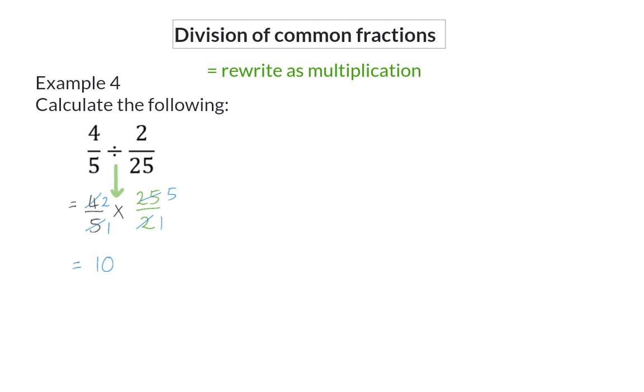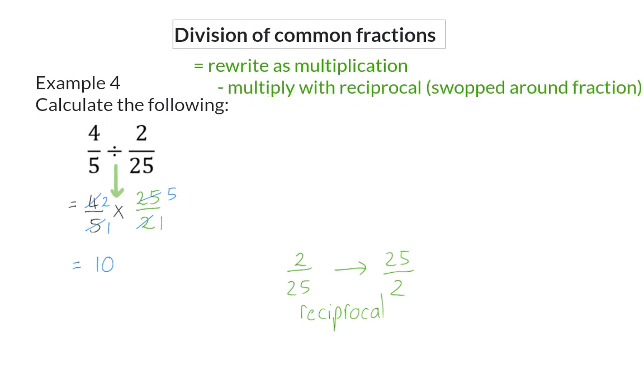The correct term for the swapped around fraction is the reciprocal. So, when rewriting division as multiplication, you will multiply with the original fraction's reciprocal.